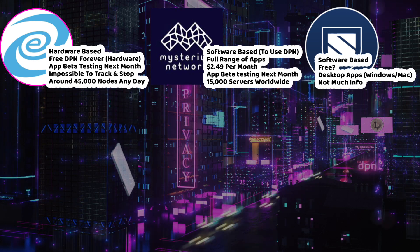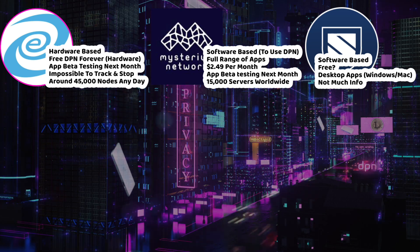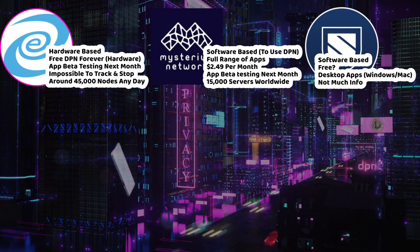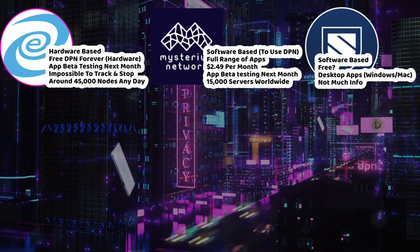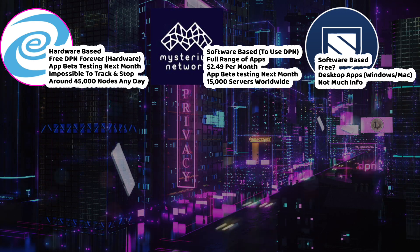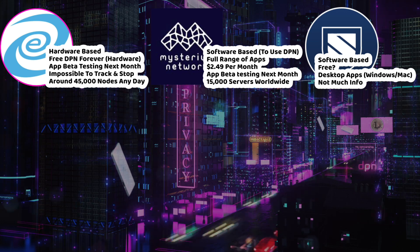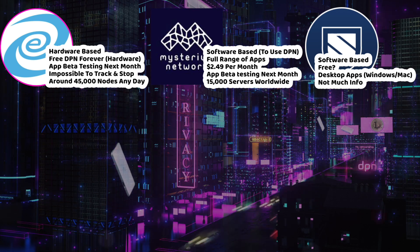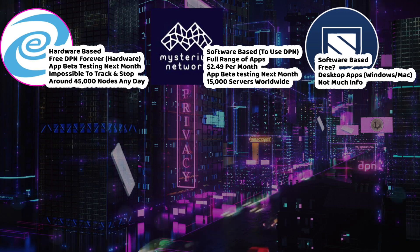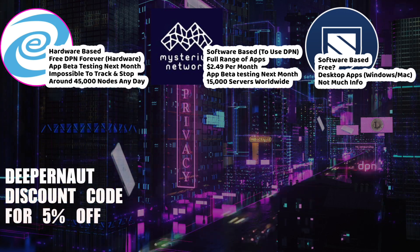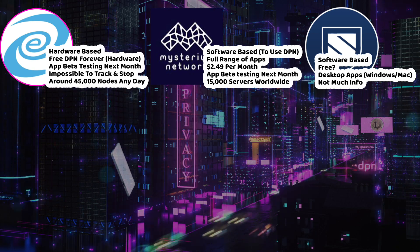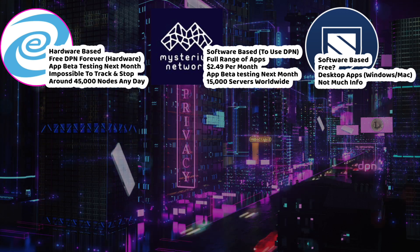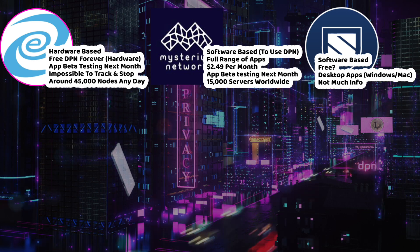The next one is Mysterium. It's been around for quite a while — not as big as Deeper Network. It is software-based for the DPN; if you want to mine, that's hardware-based. They do have the full range of apps. It's not free — you pay $2.49 a month, which is pretty cheap. They have 15,000 servers worldwide, which is way more than any VPN as well.